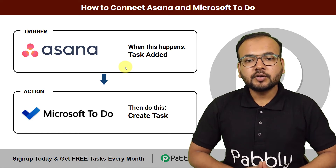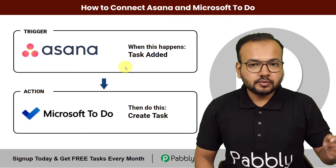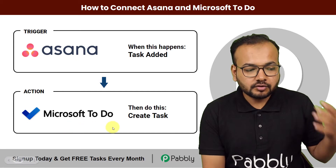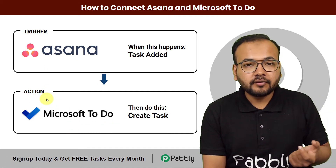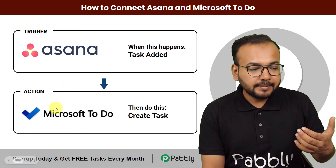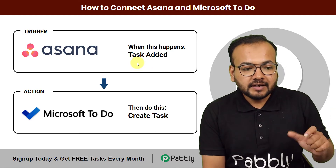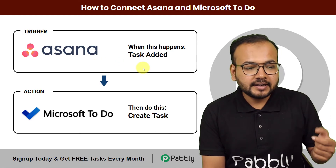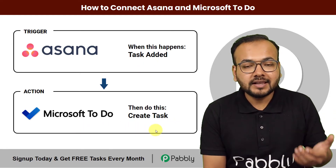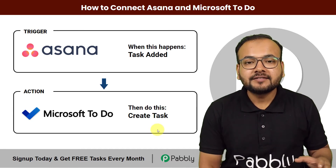In this video, you will learn how you can connect Asana with the Microsoft To-Do application. To make this connection, you have to connect Asana as the trigger application and Microsoft To-Do as the action application of the workflow of our automation. Here you can synchronize these two applications. Whenever you add any task in Asana in any list, the same task will be created in Microsoft To-Do automatically. You can make this connection using Pabbly Connect without any coding, very easily.